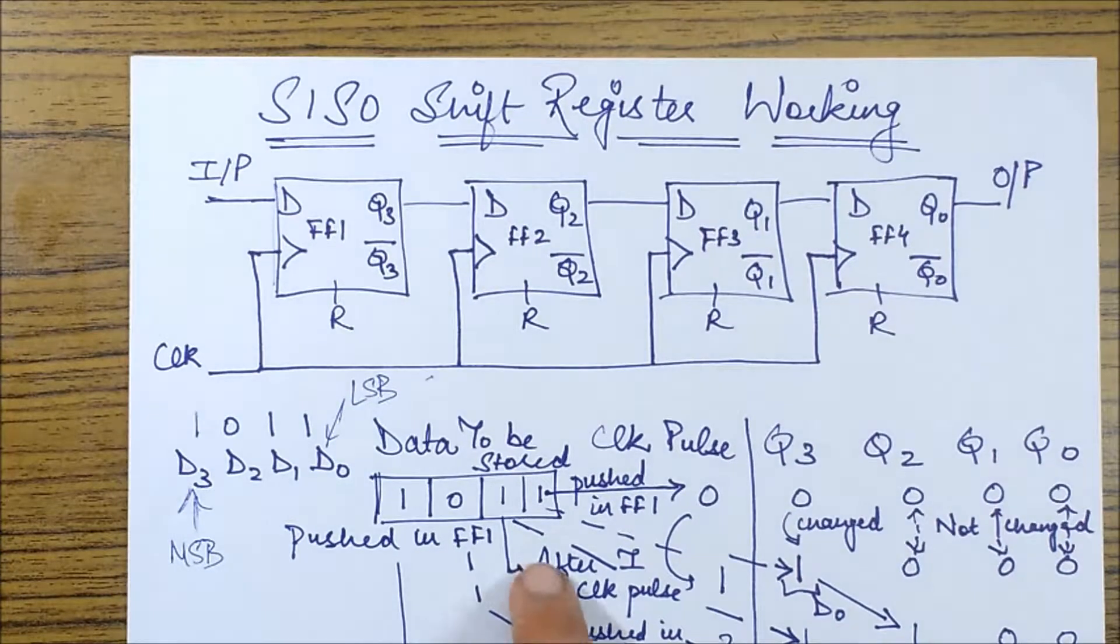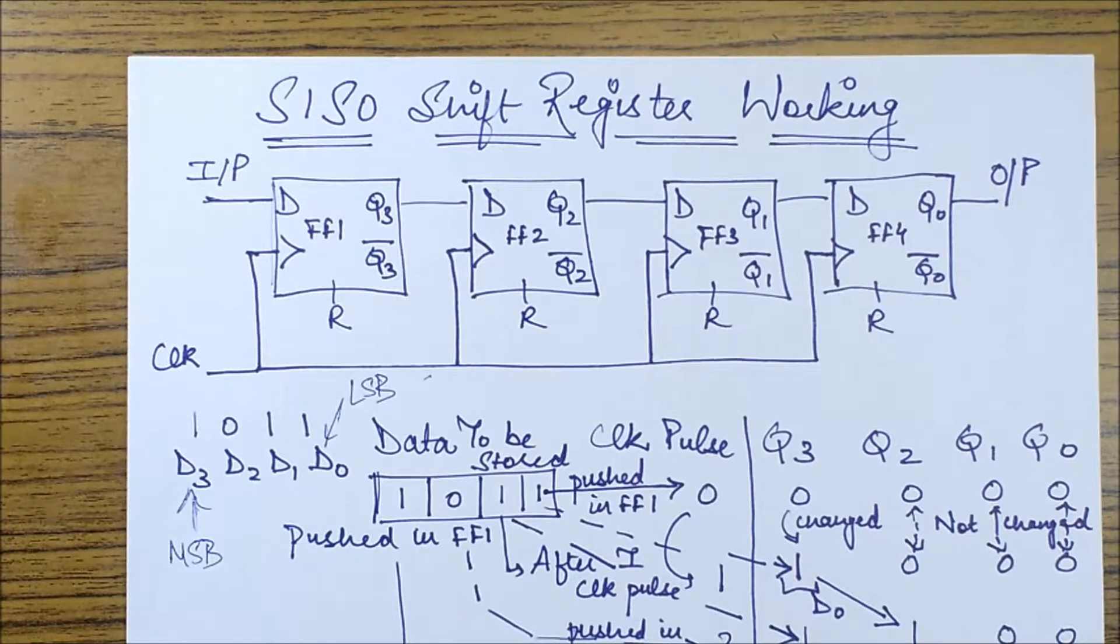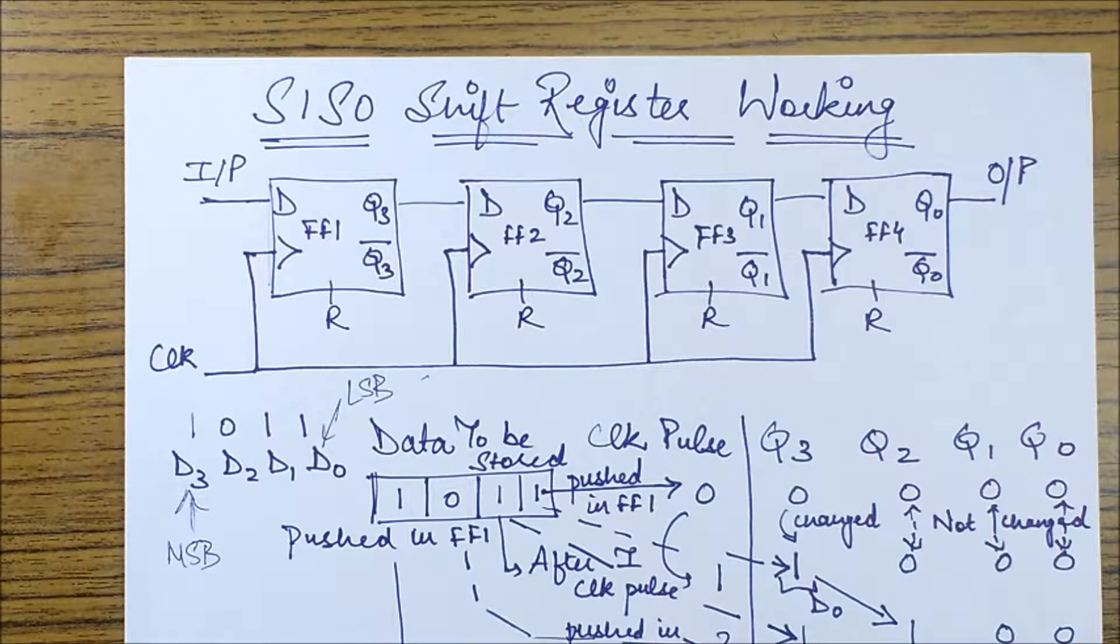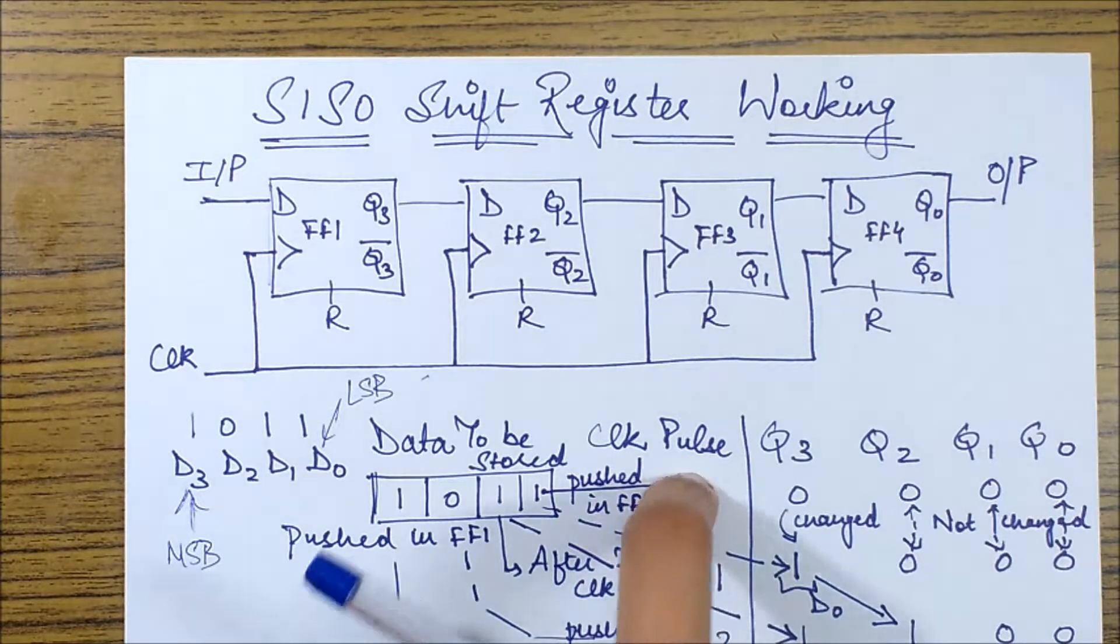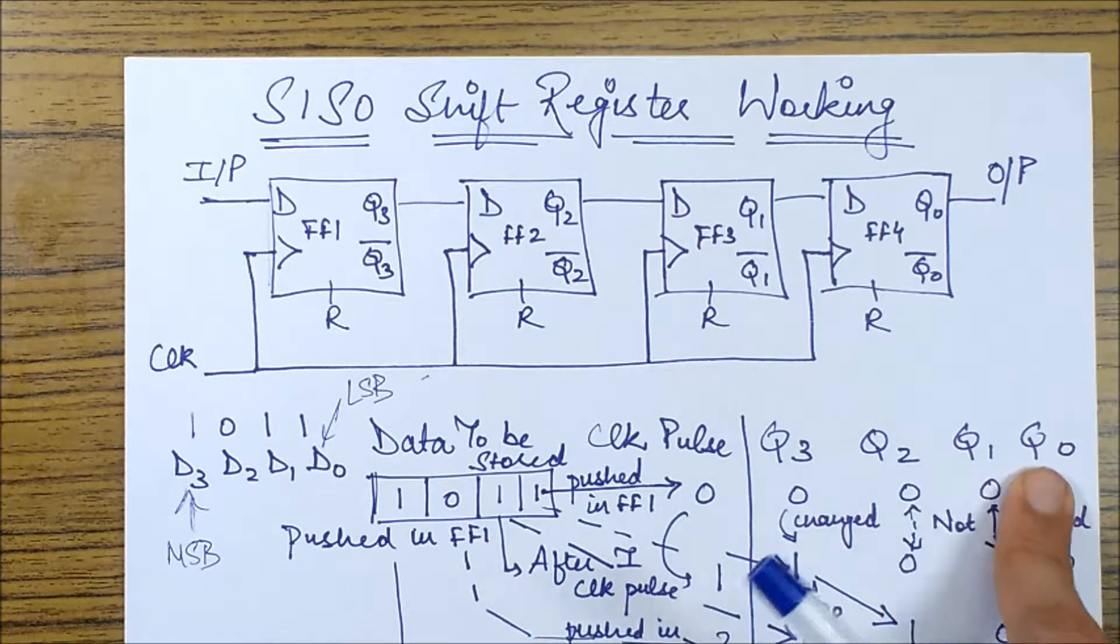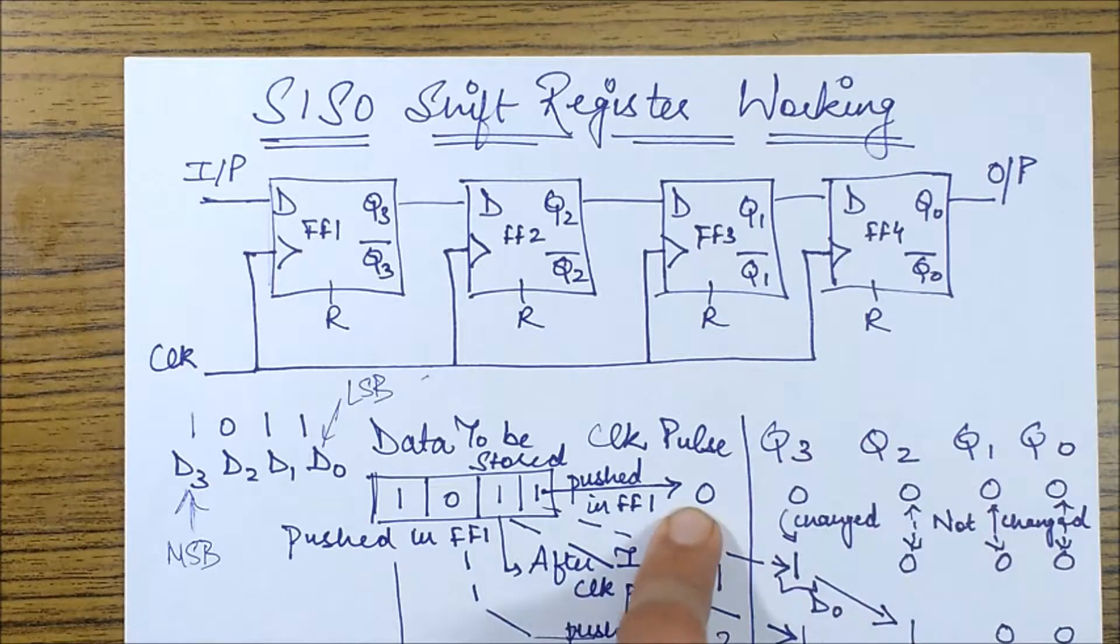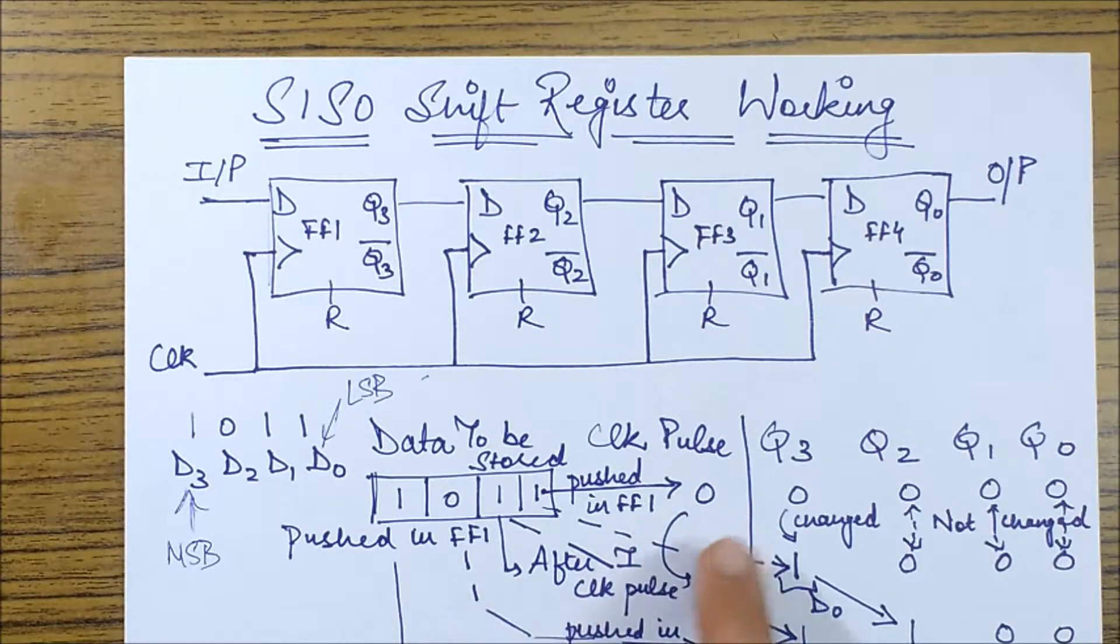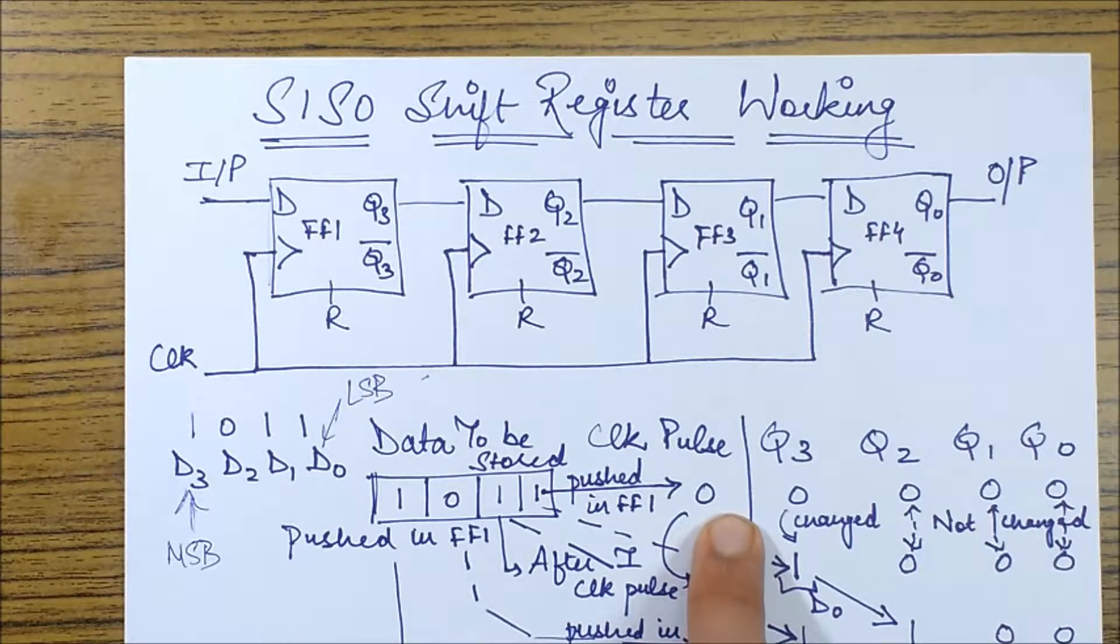I'm pushing this data bit into my FF1, which is the first flip-flop. To see the working with greater clarity, I have taken this column as my clock pulse and these as the outputs of various flip-flops at this particular clock pulse. Initially all are set to zero and the clock pulse is also zero.